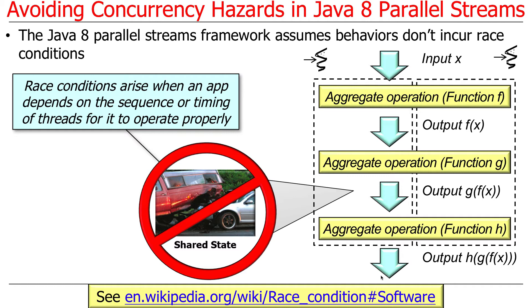I haven't talked a whole lot about how to protect shared mutable state, so the best thing for now is: don't do it. Avoid it altogether. The best way to do that is to use the streams framework, which will partition the input in such a way where you don't have shared mutable state.